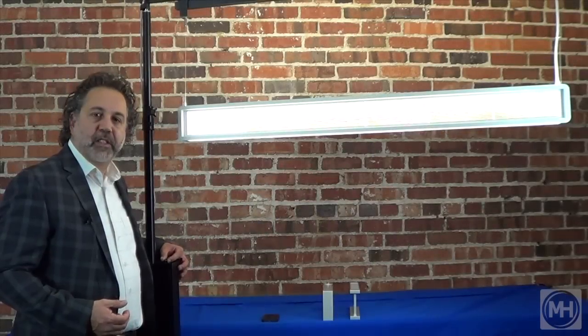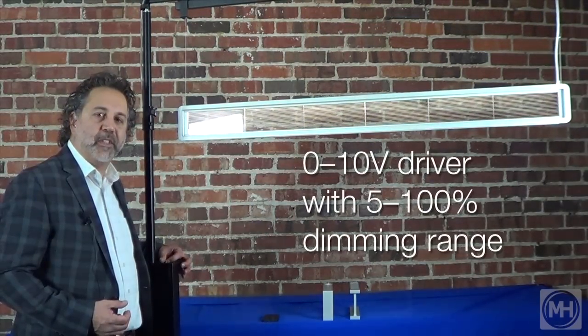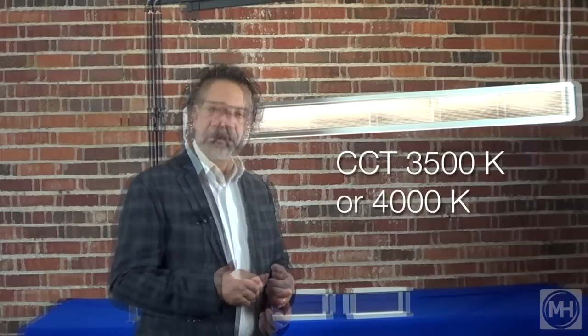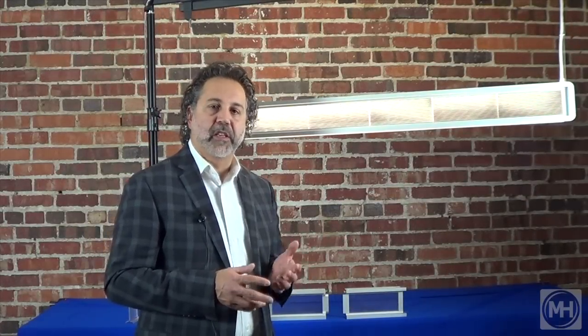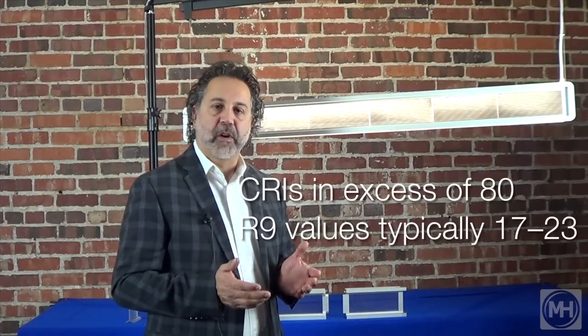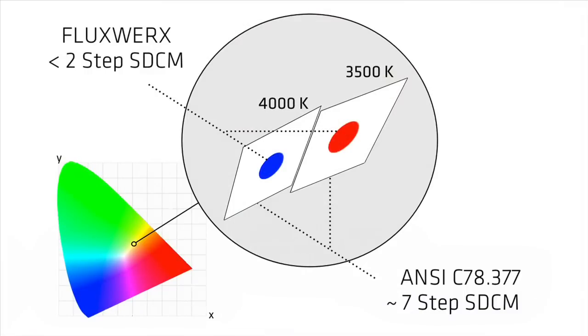All products feature a zero to ten volt dimmable driver which has a dimming range of five to one hundred percent. The products are available in two different color temperatures, 3500 and 4000 Kelvin. In terms of color accuracy, both color temperatures have CRIs in excess of 80 with R9 values typically between about 17 and 23. And both color temperatures feature a two-step mechanical ellipse for color accuracy, meaning there will be no visible difference at all along the length of the units.